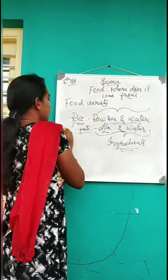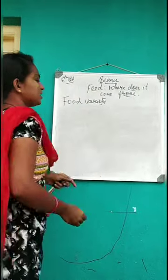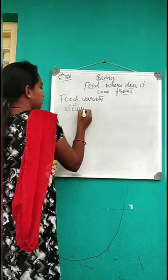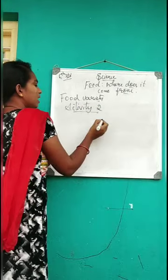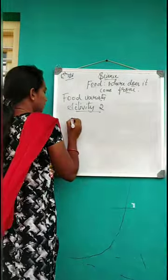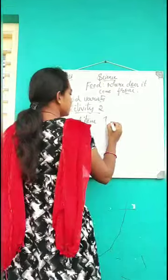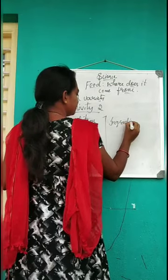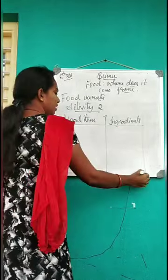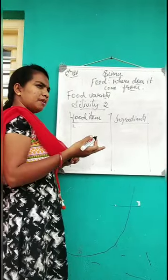There is one more activity in your reader. I am giving you two examples, and you have to write this activity. I am giving two examples. Write five more examples in your notebook. Make one column for the food item and one more column for ingredients. I have written it like this. The first example I have given you is rice and chapati.